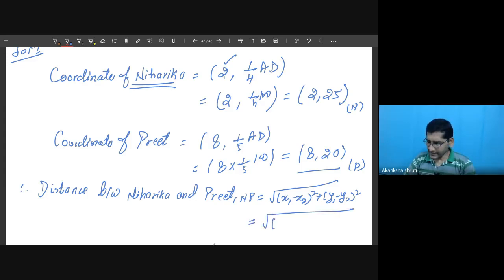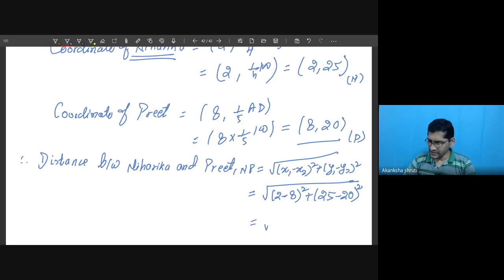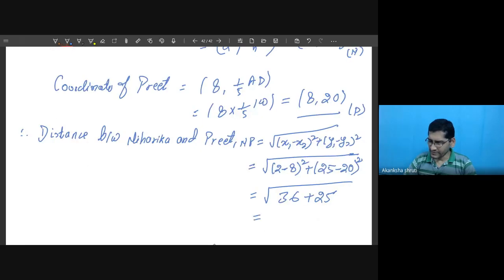You are getting for Niharika the x coordinate is 2, but the x coordinate for Preet is 8, squared, plus y coordinate for Niharika is 25 but for Preet is 20, squared. So ultimately it becomes 6 squared is 36 plus 25 minus 20 is 5 squared is 25, so it becomes square root of 61.